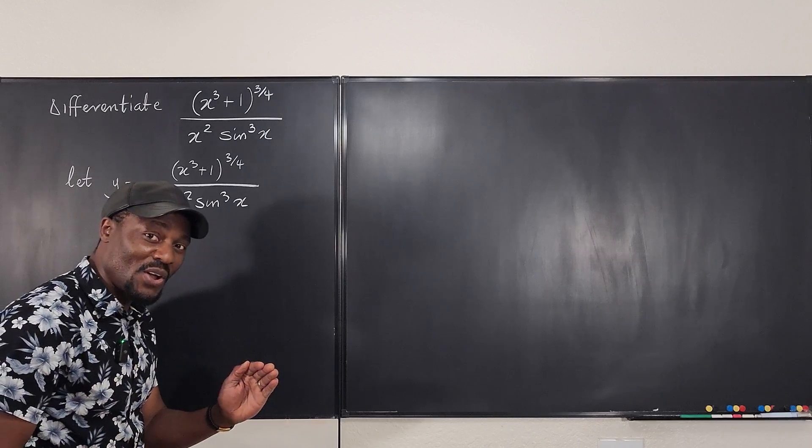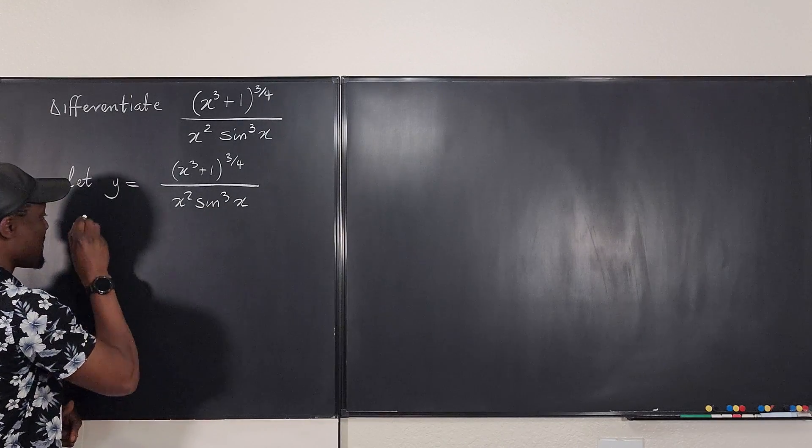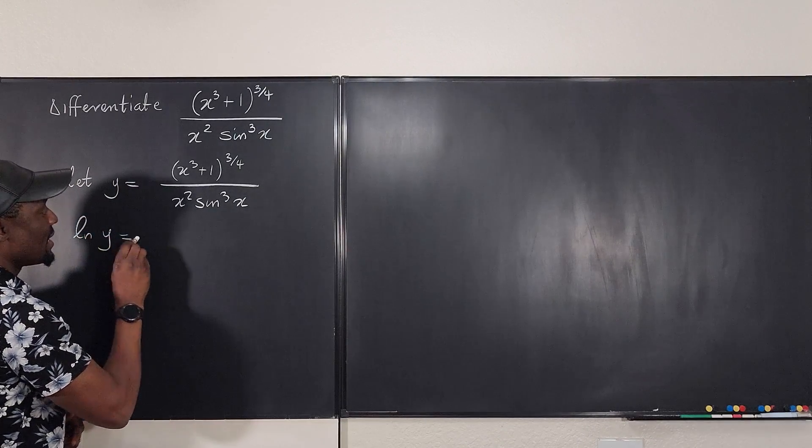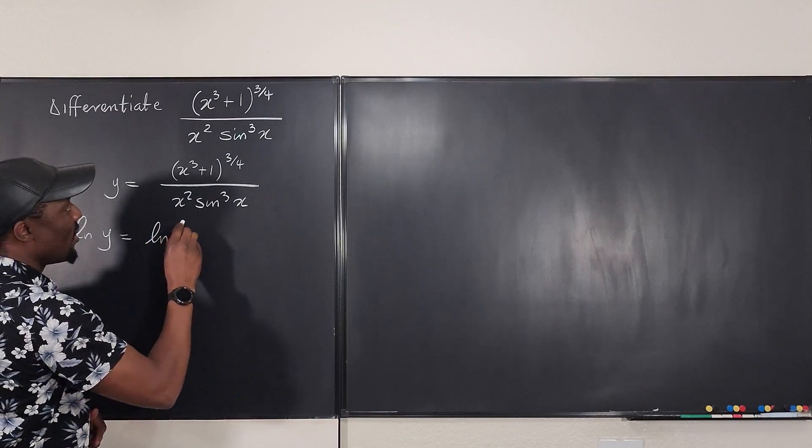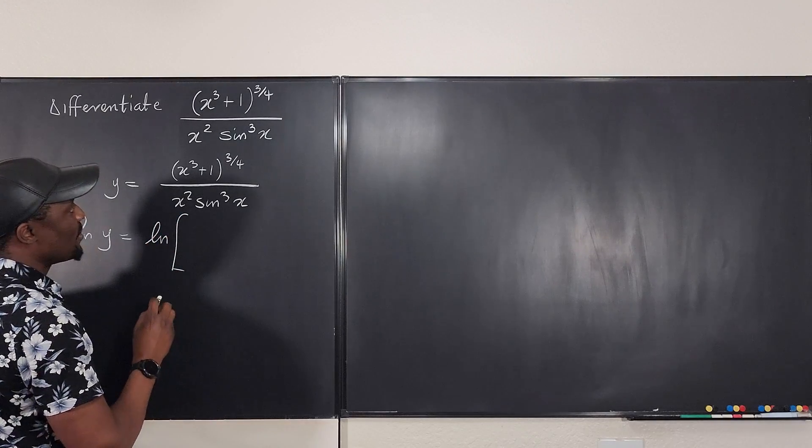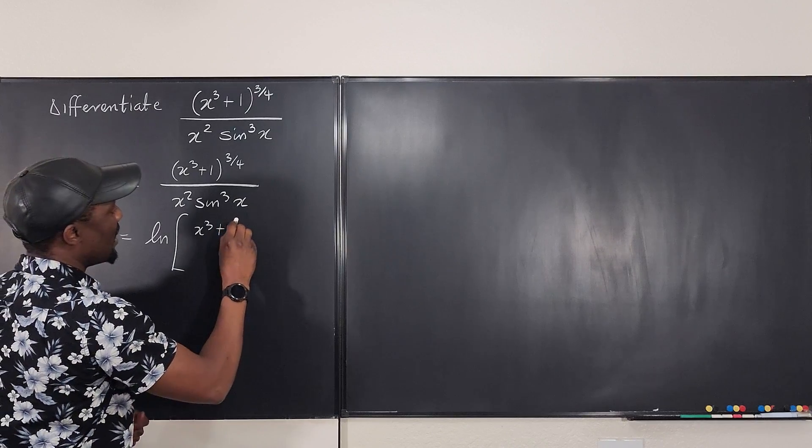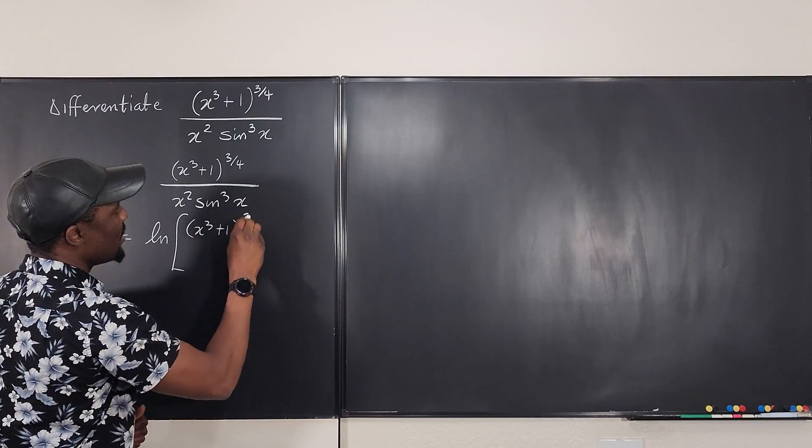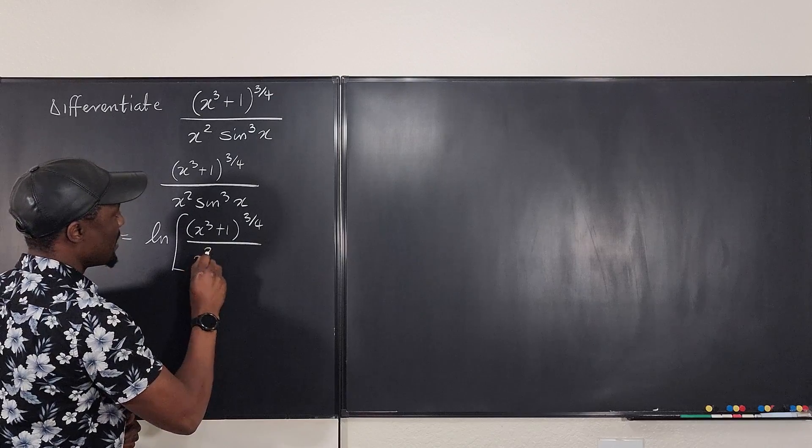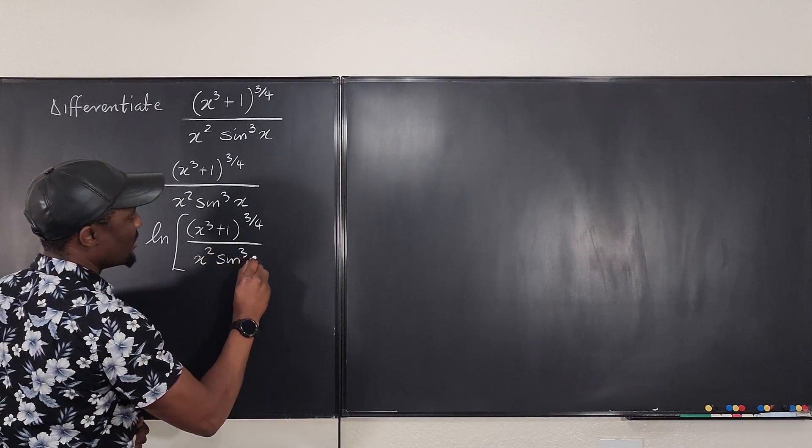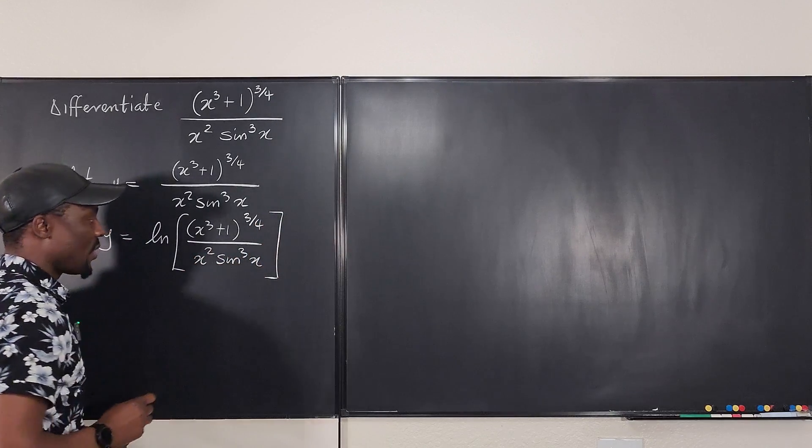I'm going to take the natural log of both sides. If I take ln of y, it means I'm taking ln of this side also. It's going to be x cubed plus 1 raised to 3 over 4 divided by x squared sine cubed x.